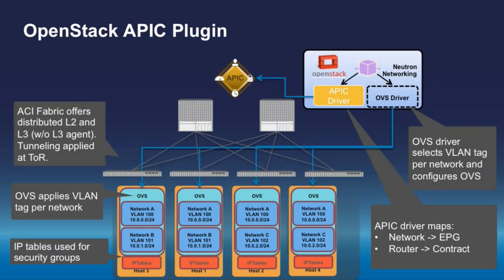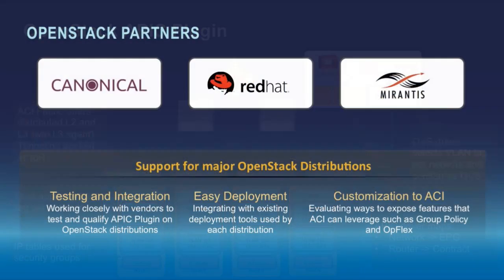Our plugin is an ML2 driver plugin which we have been supporting for the last six months already in production environments. What our plugin does is interconnect your OpenStack Neutron deployment to the ACI fabric and translate operations you perform in Neutron to program the network fabric seamlessly. We have OpenStack partners — Canonical, Red Hat, and Mirantis — and we support all these distributions along with our group based policy model and ACI.